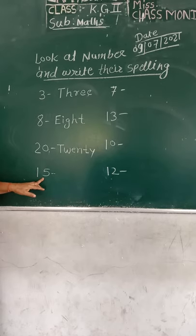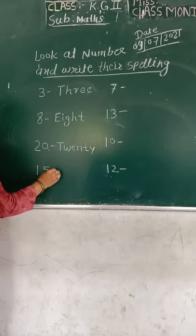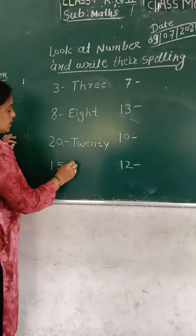Now the number is fifteen. What is the number? Fifteen. Now we are going to spell it. Spelling. F-I-F-T-E-E-N.